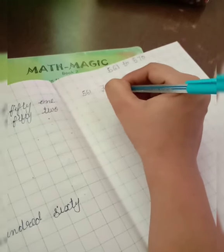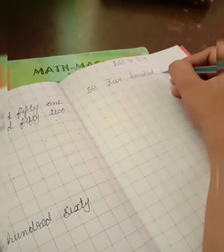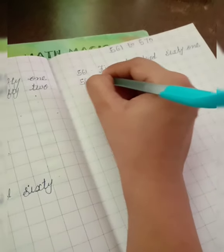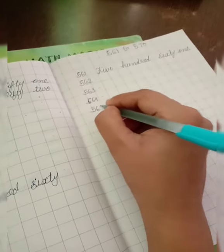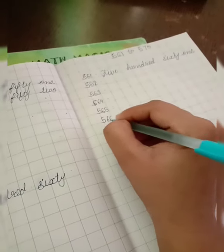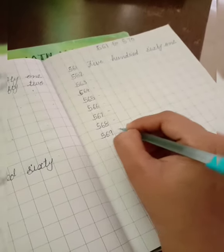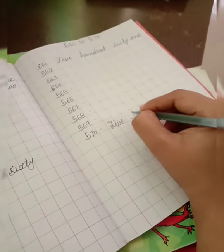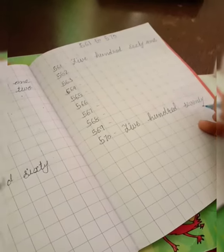F-I-V-E 5, H-U-N-D-R-E-D 100, S-I-X-T-Y 60, O-N-E 1. 561. 562, 563, 564, 565, 566, 567, 568, 569, and 570. F-I-V-E 5, H-U-N-D-R-E-D 100, S-E-V-E-N-T-Y 70.